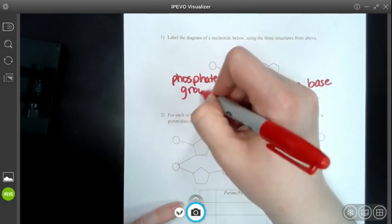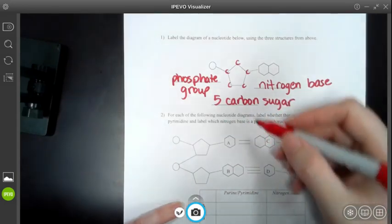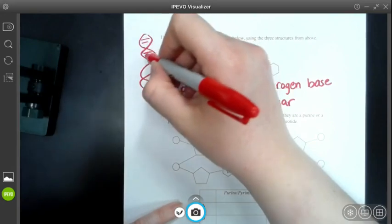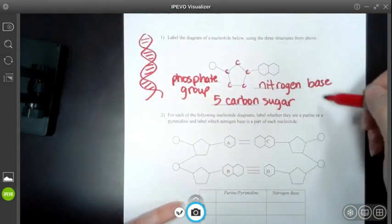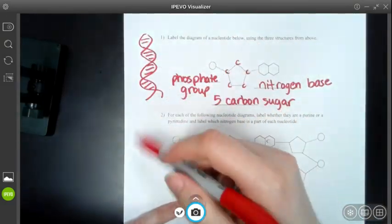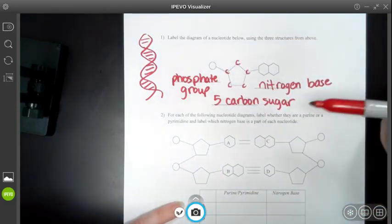Now the phosphate group and your five-carbon sugar make up the backbone of DNA. So what I mean by that is if I draw my helix here in the middle, the rungs on the ladder, those are the nitrogen bases. But the outside string or pathway, that's a phosphate group and carbon sugar.